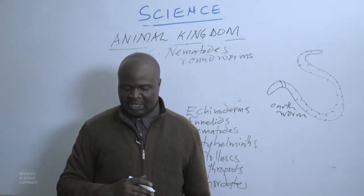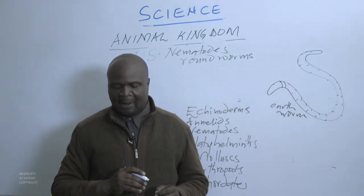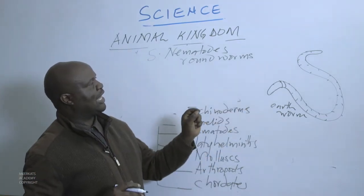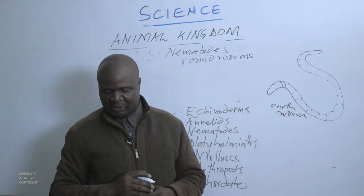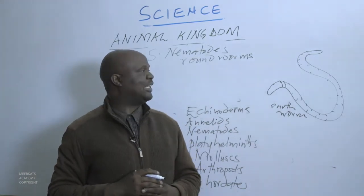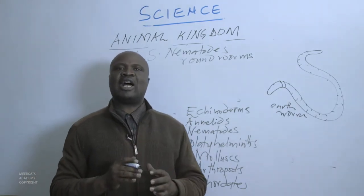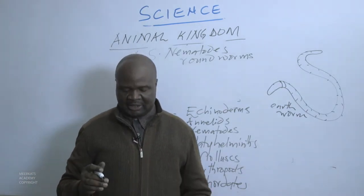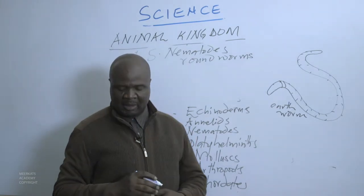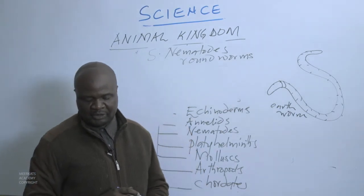Like the Annelids, Nematodes have long slender bodies, but they are pointed at the end. Unlike Annelids, they do not have segments within their bodies. Nematodes are commonly found in damp soils and water.